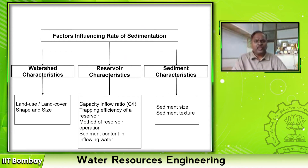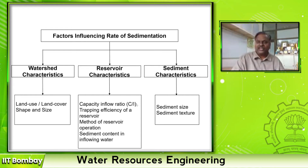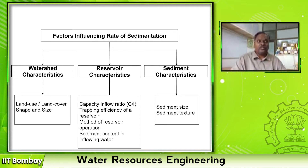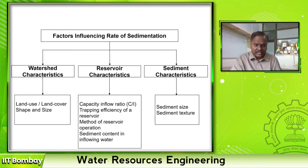The second characteristic is reservoir characteristics — how the reservoir is operated and the sediment content coming into the reservoir. The third is the capacity-to-inflow ratio: if the capacity of the reservoir is more than the average inflow at the dam site, you are trapping almost all the water and therefore more sediments. That is called the trapping efficiency of a reservoir — how much sediment is incoming into the dam and how much is outgoing, and what is the ratio of sediments that are trapped.